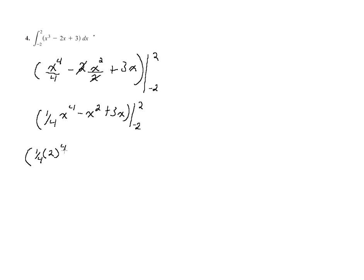So I have 1/4 times 2 to the fourth minus 2 squared plus 3 times 2, minus 1/4 times negative 2 to the fourth minus negative 2 squared plus 3 times negative 2.